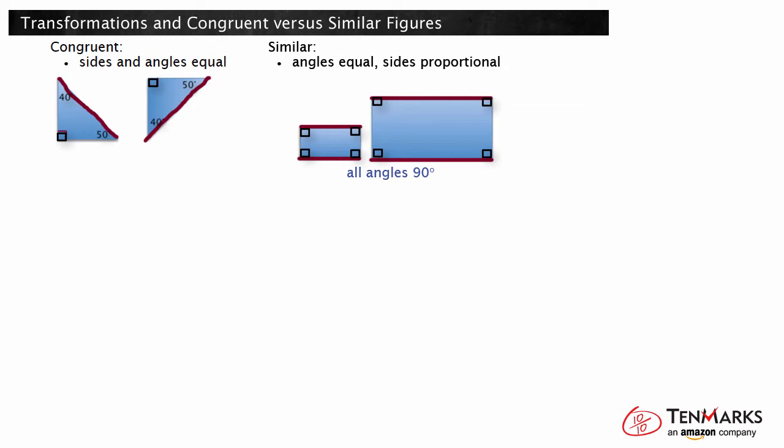Two figures are congruent if there is a way to transform one figure into the other. Rigid transformations produce congruent figures, where the pre-image and image have the same corresponding sides and angles. The rigid transformations are rotations, translations, and reflections. The remaining type of transformation is a dilation.